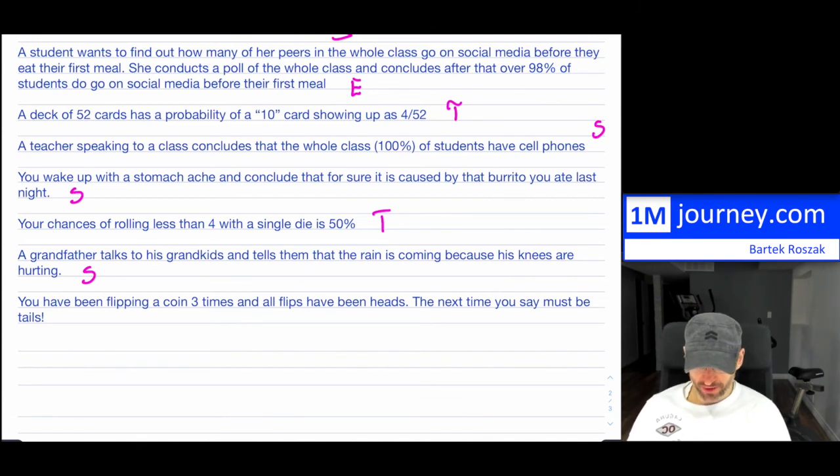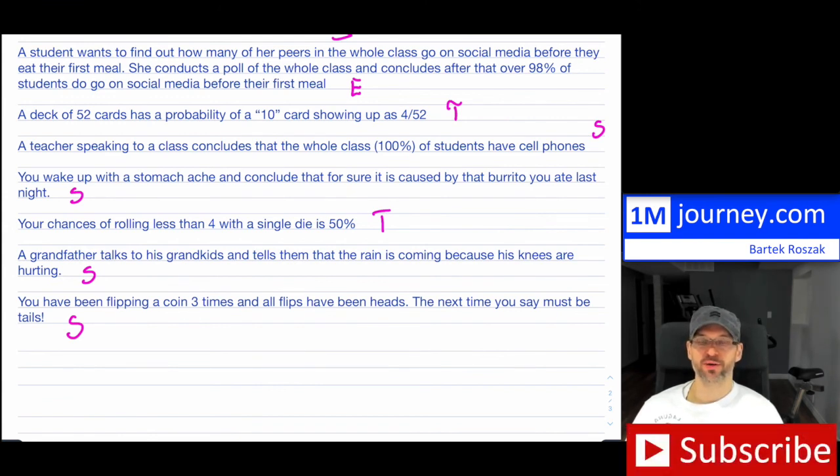Last one. You have been flipping a coin three times and all flips have been heads. Hence, the next time you say must be tails. And we get fooled like this, and then gamblers get fooled like this because they're gambling and they say next time I know that I'm going to win because I haven't won in so many times. And so, unfortunately, again, this is just subjective, based on your feelings that you may have. The reality is if you're flipping a coin, it doesn't matter that if it's three times it was heads. If it's a fair coin, of course, if you're going to flip a coin, it's still 50-50. That's what you have.